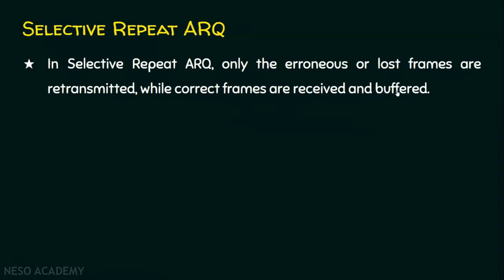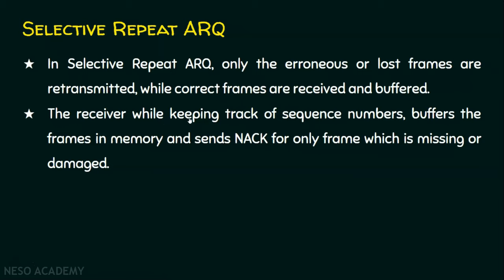In go-back-N ARQ, whether the frame is lost or the acknowledgement is lost, all the frames in the current window are retransmitted. Whereas in selective repeat, only the lost frame or the frame that has encountered errors will be retransmitted. The receiver will have to keep track of sequence numbers, and it buffers the frames in memory and sends a negative acknowledgement for only the frames which are missing or damaged.